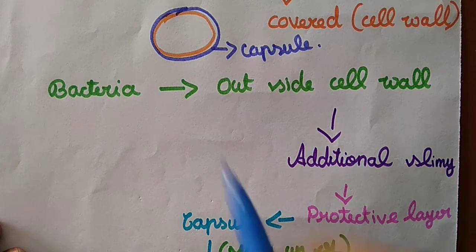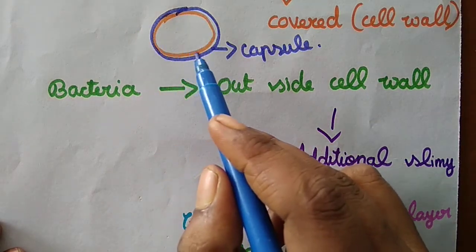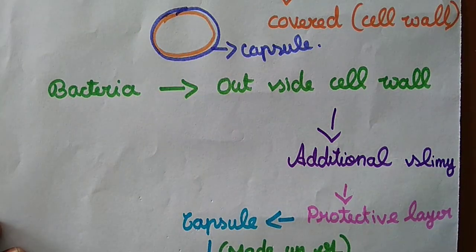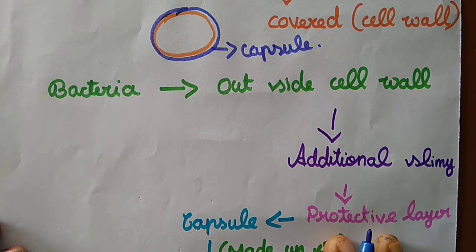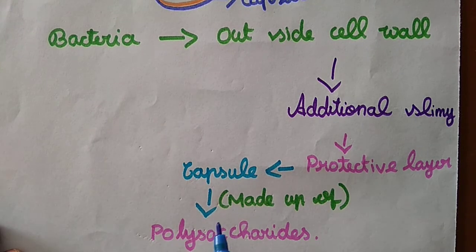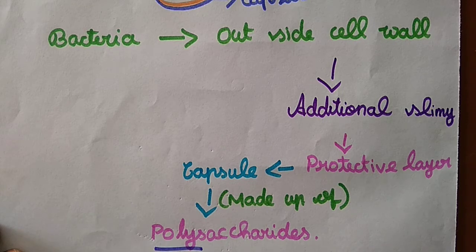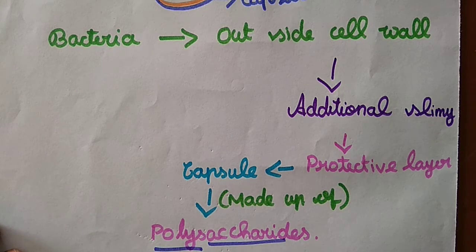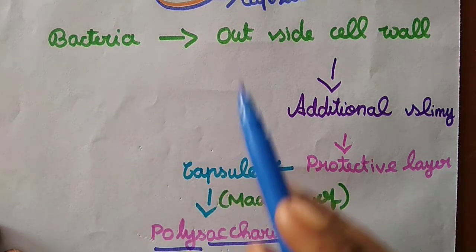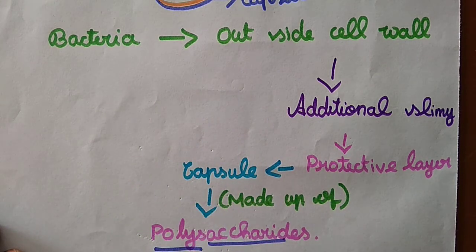In this capsule, they are made up of polysaccharide. 'Poly' means more than one number, and 'saccharides' means sugar molecules. So more than one number of sugar molecules are present in the capsule.